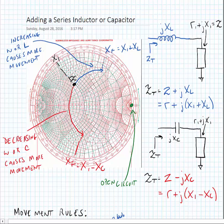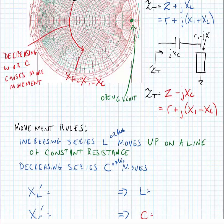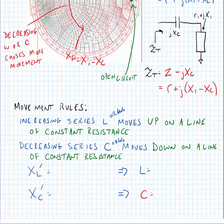We can define some movement rules based on what we've observed. If we increase the series inductance or the center frequency of operation, we move up on a line of constant resistance on the Smith chart. If we add a capacitor with a decreasing series capacitance value or decreasing frequency, it moves down on a line of constant resistance. We can calculate the value of reactance and hence inductance or capacitance using the values read from the chart.